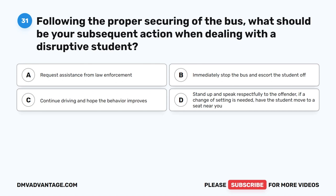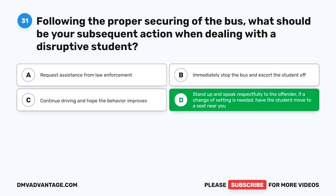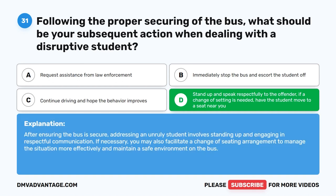Question 31. Following the proper securing of the bus, what should be your subsequent action when dealing with a disruptive student? The correct answer is D. Stand up and speak respectfully to the offender. If a change of setting is needed, have the student move to a seat near you. After ensuring the bus is secure, addressing an unruly student involves standing up and engaging in respectful communication, and if necessary, facilitating a change of seating arrangement to maintain a safe environment on the bus.